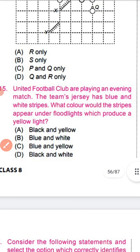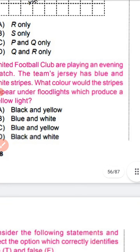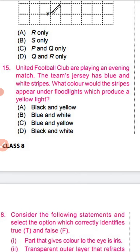Now come to question number 15. United football club are playing an evening match. The team's jersey has blue and white strips. What color would the strips appear under floor lights that produce yellow light? The answer is black and yellow. Option A is the correct option.